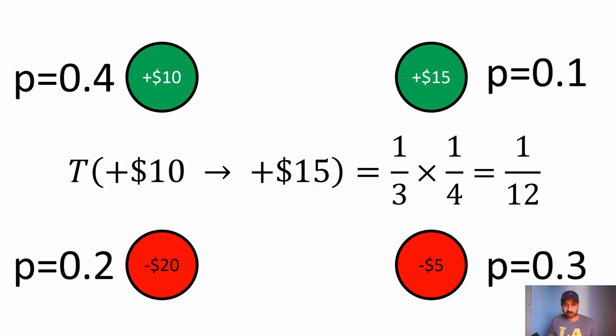To get the full transition probability, the transition probability of moving from state plus $10 dollars to plus $15 dollars would simply be the multiplication of the candidate, the proposal probability, and the acceptance probability. Another way to say that in words is there's a one-third chance of being proposed to move to plus $15 dollars and subsequently there's a one-fourth chance of accepting that proposal. Multiply those two things together and you have that the transition probability of going from state 10 to state 15 should be 1 over 12. And that is one piece of our Markov chain.